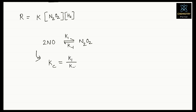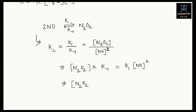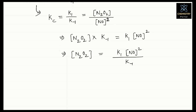From the KC expression, we can find the value of [N₂O₂]. Rearranging: [N₂O₂] × K₋₁ = K₁ × [NO]², so [N₂O₂] = K₁ × [NO]² / K₋₁.